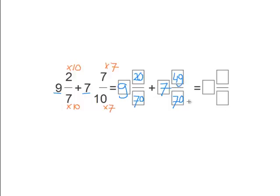Now we need to add these all up. We keep the common denominator of 70. Add the 9 and the 7 together, which is 16. And now add 20 plus 49, which equals 69.